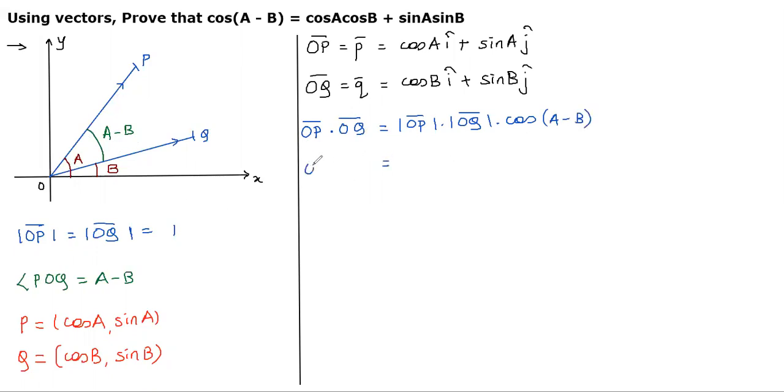Further, you can write this as OP · OQ = |OP| × |OQ| × cos(A-B). Since |OP| and |OQ| are both 1, this is 1 × 1 × cos(A-B). So, I got OP · OQ = cos(A-B). Let this be equation number 1.